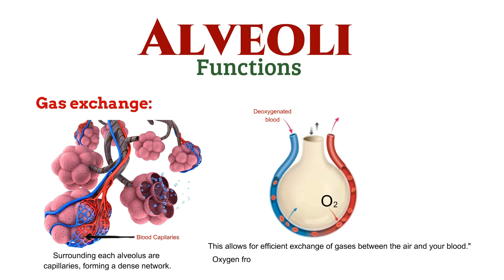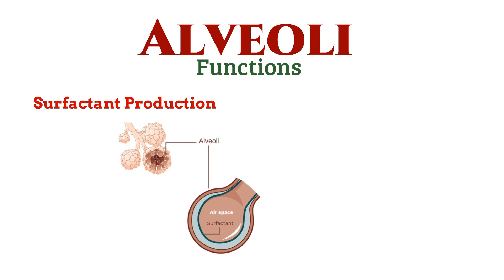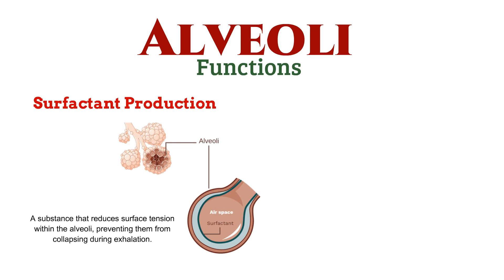Oxygen from the air diffuses into your bloodstream, while carbon dioxide moves from your bloodstream into the alveoli to be exhaled. Additionally, alveoli produce surfactant, a substance that reduces surface tension within the alveoli, preventing them from collapsing during exhalation.